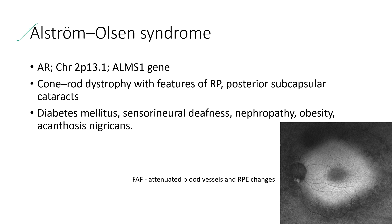Next is Alstrom syndrome. It is an autosomal recessive condition. The ocular features include cone-rod dystrophy with features of retinitis pigmentosa and posterior subcapsular cataracts. A fundus autofluorescence image shows attenuated blood vessels and RPE changes. The systemic features include diabetes mellitus, sensorineural deafness, nephropathy, obesity, and acanthosis nigricans.